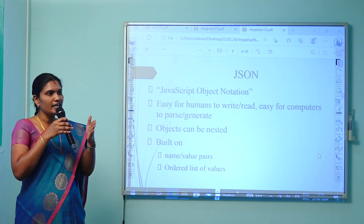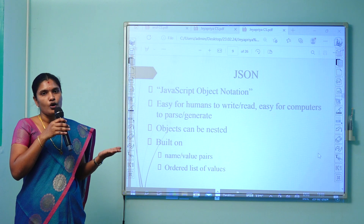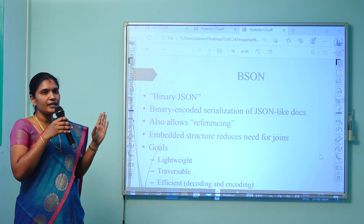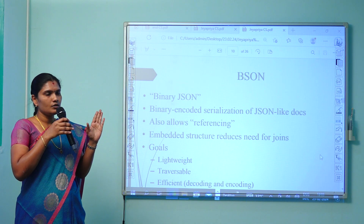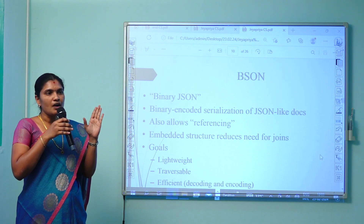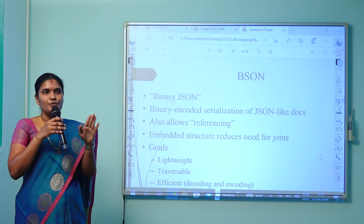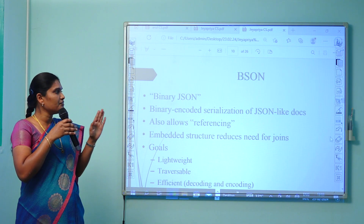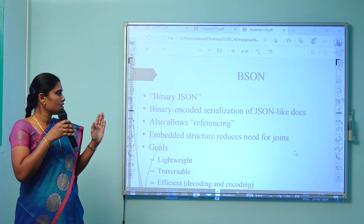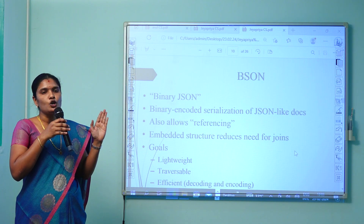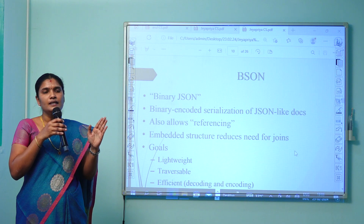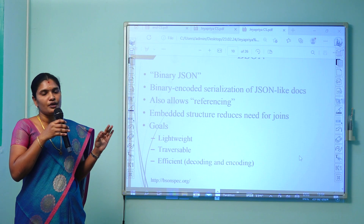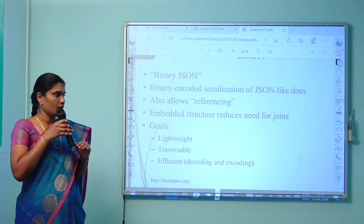JSON consists of built-in key-value pairs with name and value, and stores data in the form of an ordered list. BSON stands for Binary Script Object Notation. The code written in JavaScript Object Notation is converted into Binary Script Object Notation for processing with the backend database — that is, binary encoded serialization of JavaScript object notation like documents. It follows embedded structures, replacing the join concept in SQL with the embedded concept in NoSQL. Its goals are to be lightweight, traversable, and efficient for encoding and decoding when compared with SQL.